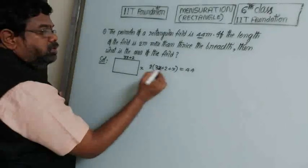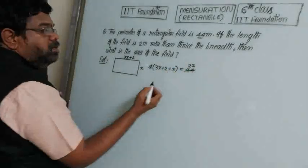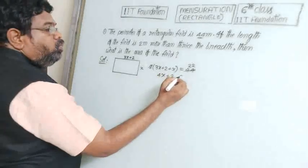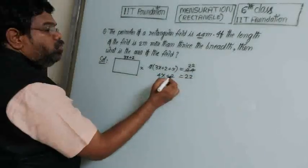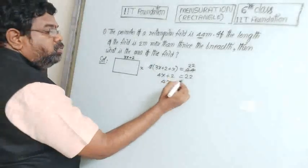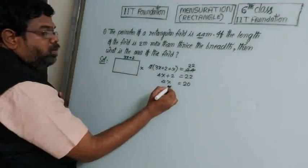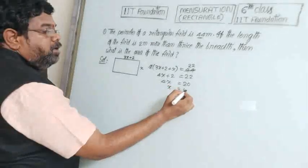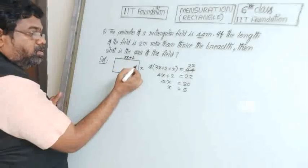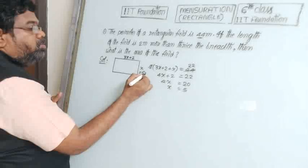Cancel the 2 on both sides to get 22. Now 3x plus x is 4x, so 4x plus 2 equals 22. Taking 2 to the other side: 4x equals 20, so x equals 5. Breadth is 5 meters.